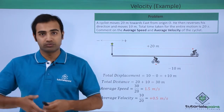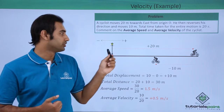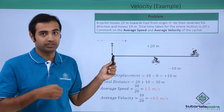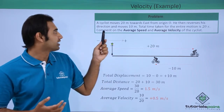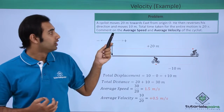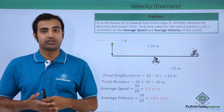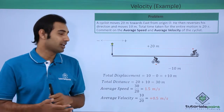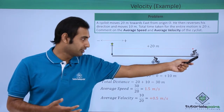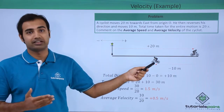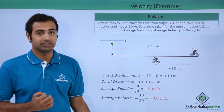Now let's try to solve a problem based on what we just understood. A cyclist moves 20 meters towards east from the origin O. At the lamp post we take the origin O and he moves 20 meters towards east. He then reverses his direction and moves 10 meters. Total time taken for the entire motion is 20 seconds. Comment on the average speed and average velocity of the cyclist. The cyclist travels 20 meters east and then reverses direction, travelling 10 meters back, meaning 10 meters west. Finally the cyclist ends up here at the end of this entire motion.